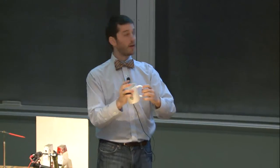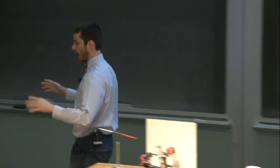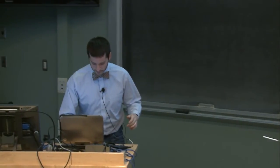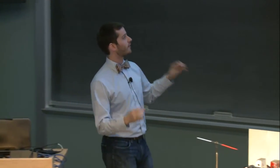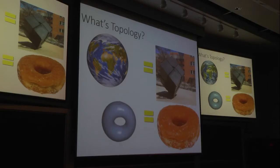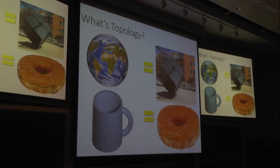In the same way, a coffee mug and a donut are topologically equivalent. If the coffee mug was made of Play-Doh, I could push and mold it until it was a donut. I'll actually do this with a little computer magic — I'm going to turn this coffee mug into a donut. You can see it turns into the donut without me ever having to break it. But if I wanted to turn the coffee cup into a cube, I would have to break the handle.